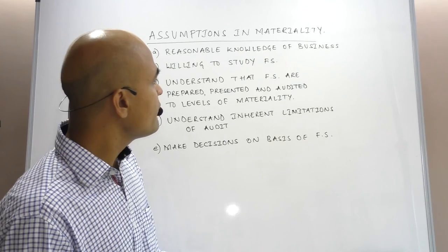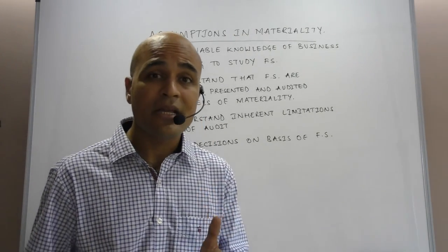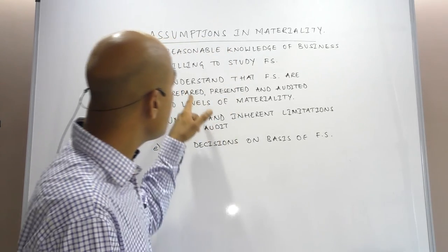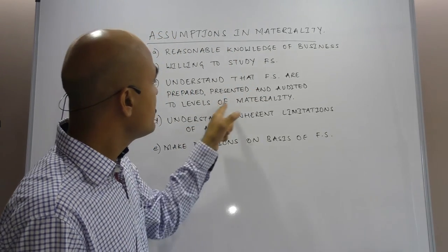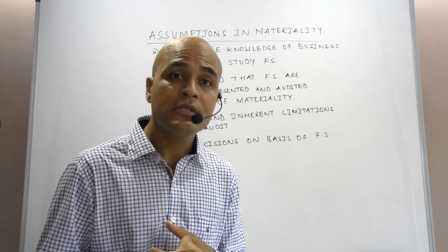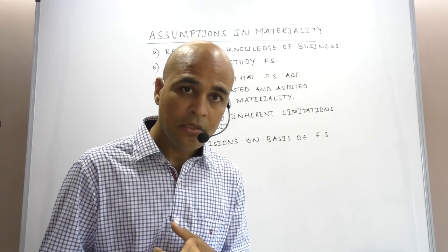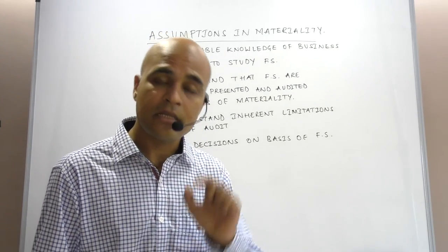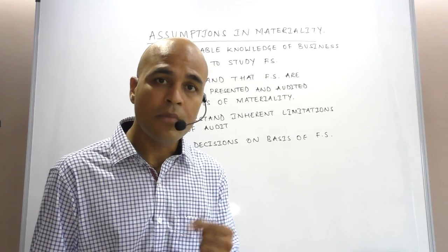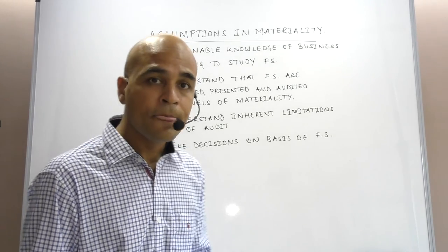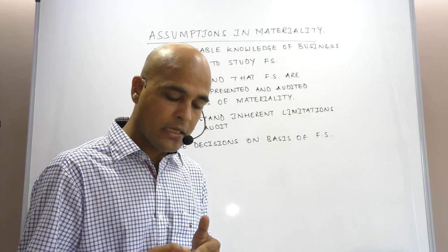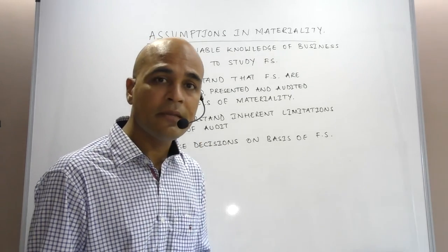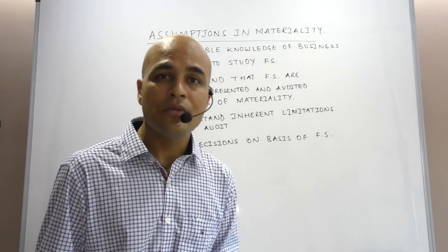The third and most important presumption is that users understand that financial statements are prepared, presented, and audited to levels of materiality. We have discussed the requirement of Schedule 6 — 1% of turnover or 1 lakh rupees, whichever is higher. This has to be kept in mind when preparing financial statements, as separate disclosure will be required. So materiality level affects the preparation of financial statements, influences their presentation, and if there is a material item, it has to be presented or disclosed separately. Financial statements are also audited subject to levels of materiality.